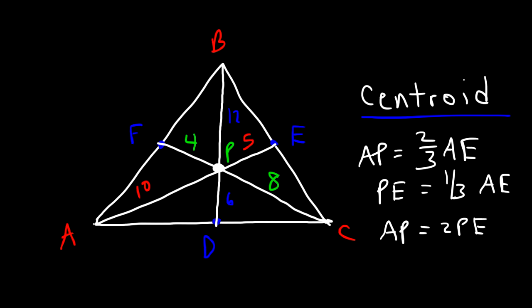To review, the centroid inside a triangle can be identified by the intersection of the three medians. If AE is the median, then E is the midpoint of BC, which means BE and EC are congruent. BD is the median to AC, so D is the midpoint of AC, meaning AD and DC are congruent. F is the midpoint of AB since FC is the median, so FB and AF are congruent.